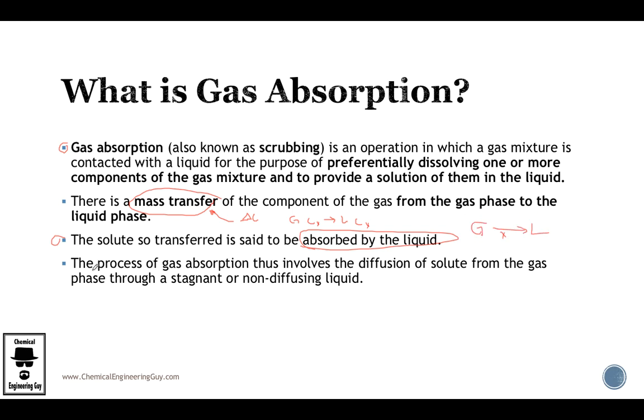Talking about X. Now this is my last bullet before ending the lecture. The process of gas absorption thus involves the diffusion of solute from the gas phase through a stagnant or non-diffusing liquid. I know that you might find this interesting. Probably you already took some mass transfer. You know this specific case in which you have diffusion. Remember, diffusion occurs in two cases in binary mixtures. The first case is either equimolar, in which you know that A goes to the right side and B goes to the left side in the same amounts.